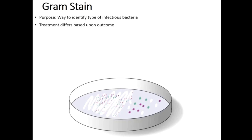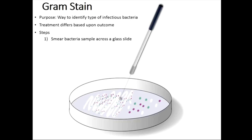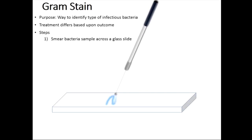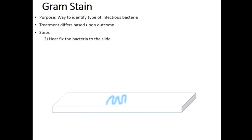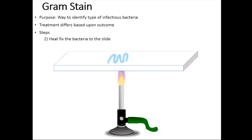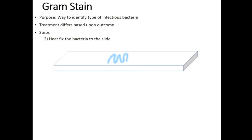Looking at the steps of a gram stain: first, we obtain bacteria from a culture and, using an inoculation loop, transfer bacteria onto the loop and smear them across a glass microscope slide. The next step is to fix the bacteria to the slide so they don't get washed away in upcoming steps. We do this by passing the glass slide over an open flame a few times — the heat fixes the bacteria to the slide.